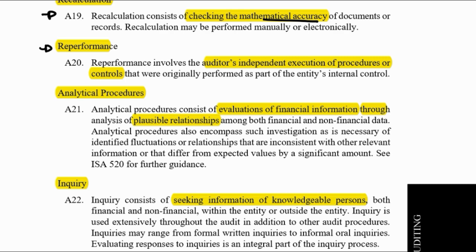Re-performing means re-performing any control that they've done. Note that when I say re-performing, I've linked it to a control — the other procedures above are not exclusively linked to controls. When you do a test of detail and inspect a document, you're getting substantive evidence, but if you're inspecting a document for a control being done — such as authorization or being pre-numbered — you're testing a control. You could also observe something for substantive evidence or observe something to test a control, such as access controls. Re-performing is only applicable where there is a control, so it is only ever a test of control.